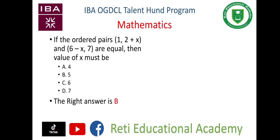The right option is B, 5. Now watch the explanation. Since (1, 2+x) is equal to (6-x, 7), we must have 1 = 6-x and 2+x = 7.